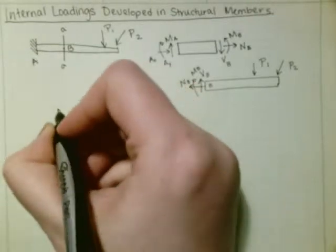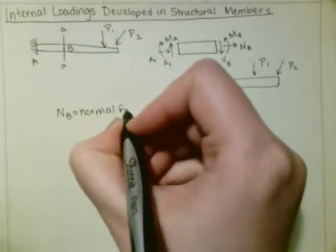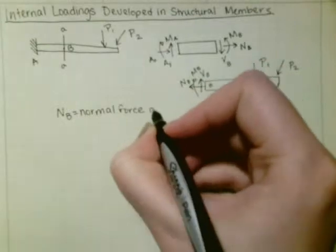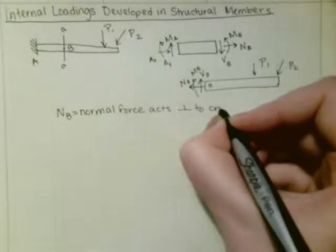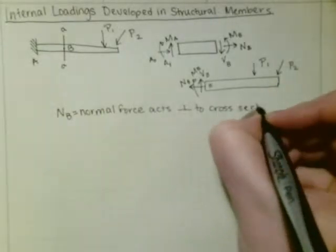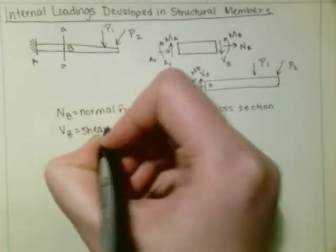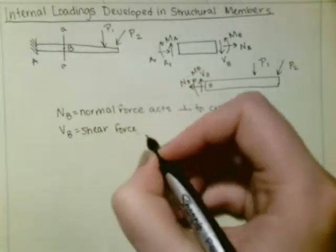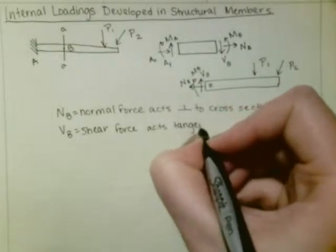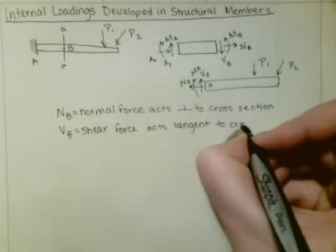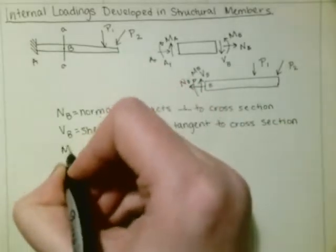NB is our normal force, and it acts perpendicular to the cross-section. VB is our shear force, and it acts tangent to the cross-section. And then we have MB, our bending moment.